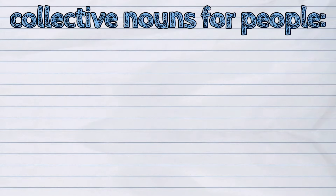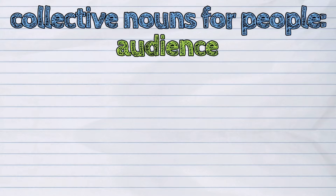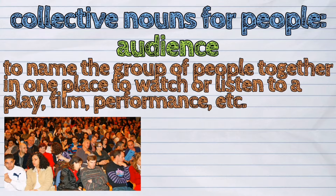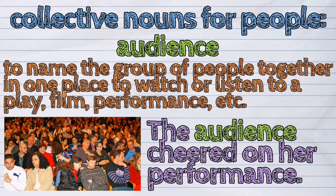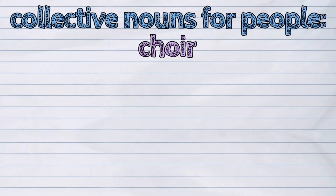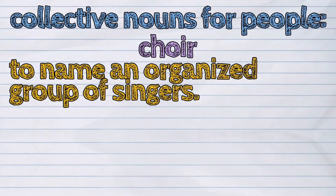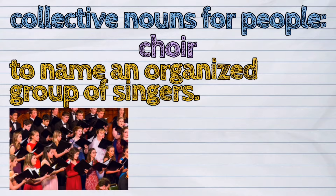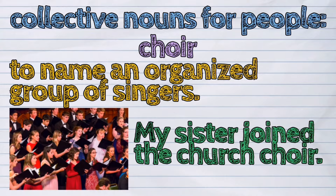For people, we use the following words. Audience: to name the group of people together in one place to watch or listen to a play, film, performance, etc. The audience cheered on her performance. Choir: to name an organized group of singers. My sister joined the church choir.